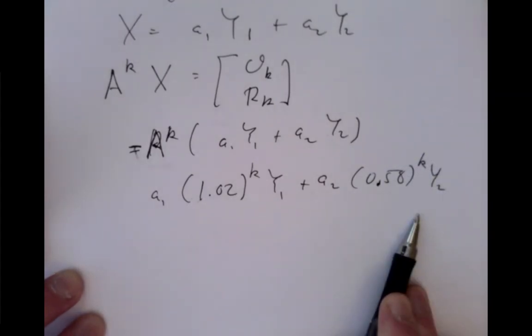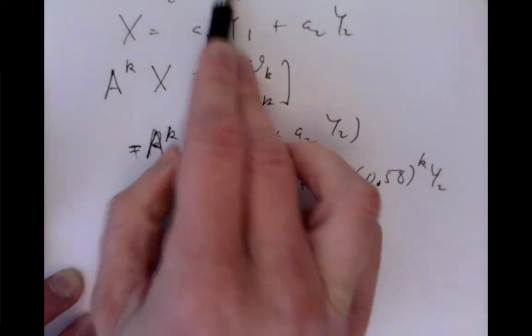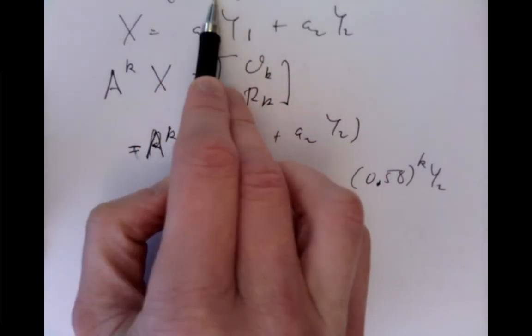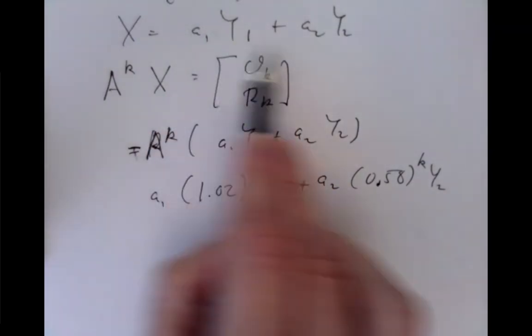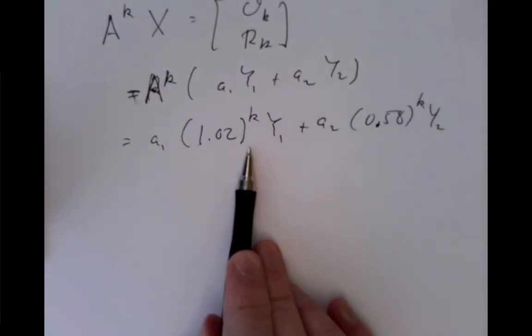So we know exactly what happens forever. Once we can calculate out these a_1 and a_2 coefficients for a given input vector of owls and rats, you know initially what the owls and rat numbers are, you plug that in, you calculate out a_1 and a_2, they come out here, and you just get this expression for what happens over time.